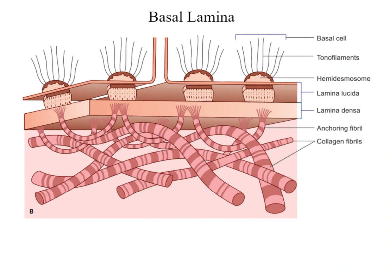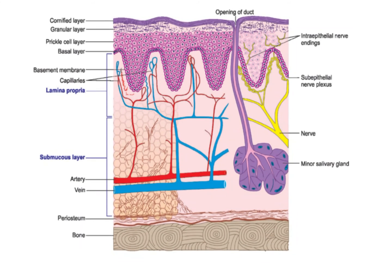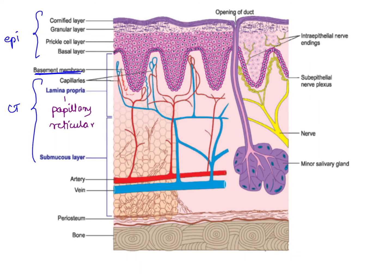Looking at this picture, we can appreciate lamina lucida present towards the epithelial side and lamina densa towards the connective tissue side, where the anchoring fibrils of type 7 collagen attach. The three important components of oral mucosa are the epithelial layers, basement membrane, and the underlying connective tissue — lamina propria and submucosa. Lamina propria further consists of a papillary layer, which extends into the epithelium between epithelial rete ridges, and a reticular layer forming the remaining portion.